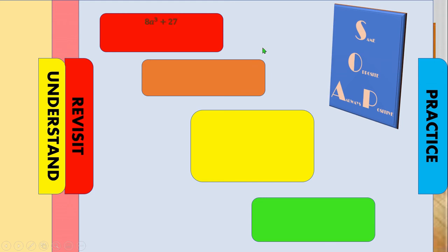Let's practice. Practice number one: a cubed plus 27. Express it as the cubes of 2a and 3. Get the cube root of the first term and the cube root of the second term for our binomial — the sign is the same as the given. The trinomial is the square of the first term, the product of the first and second term, and the square of the last term — signs are opposite then always positive.